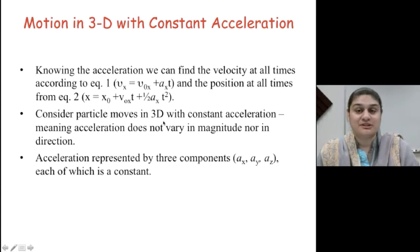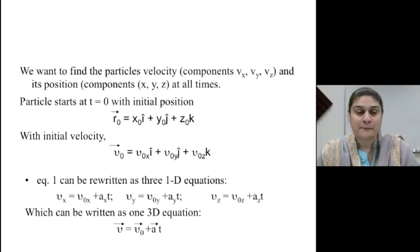Now, for a particle that's moving in three dimensions with constant acceleration, we can represent the acceleration by their components ax, ay, az, each of which is a constant. So, in order for us to understand this, let's say a particle starts at t equals zero with initial position r-naught and with initial velocity v-naught. We can find all future velocities given r-naught initial position in three dimensions and v-naught initial velocity in three dimensions by using equation one.